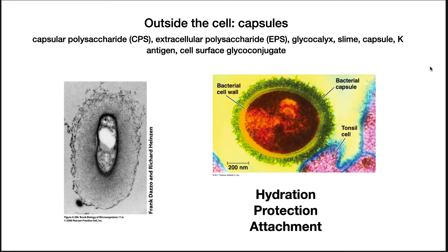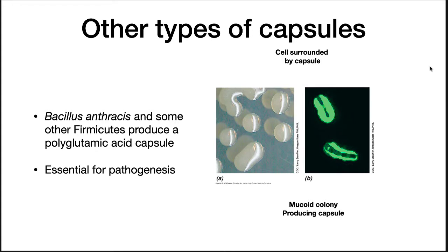For example, the capsule of Streptococcus pyogenes helps it adhere to tonsil cells. Polysaccharides are not the only type of capsule. For example, Bacillus anthracis and some other firmicutes produce capsules made of the amino acid glutamate. If the bacterium loses the ability to make this capsule, it is no longer pathogenic, so it is clear that it is important in its pathogenesis.